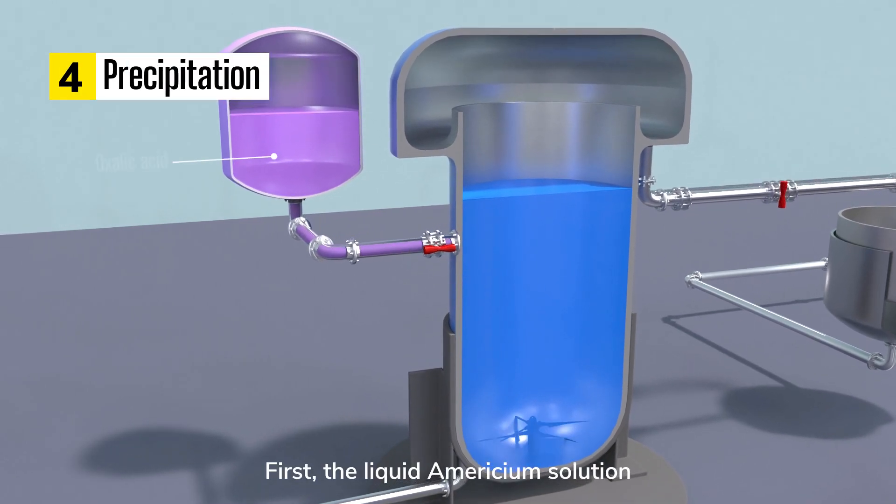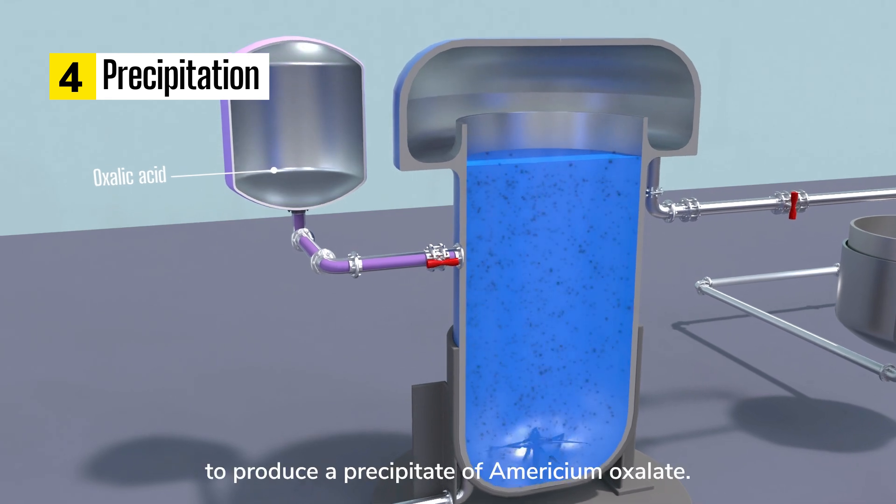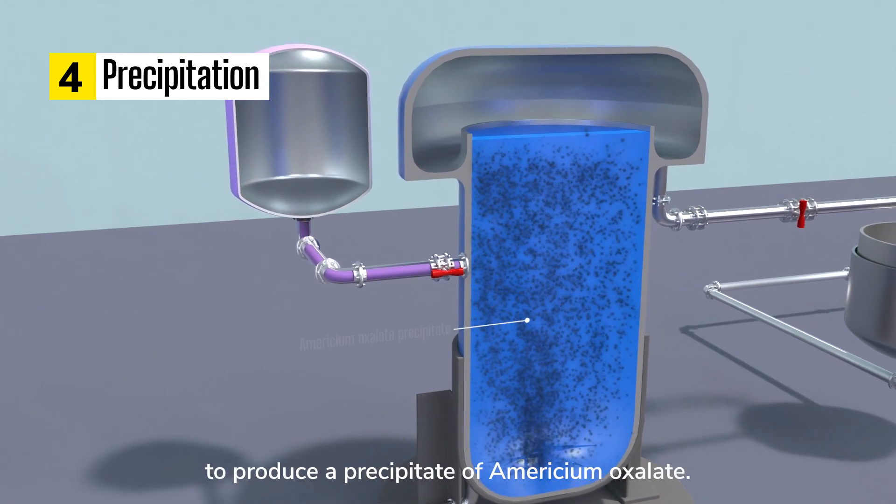First, the liquid Americium solution is mixed with oxalic acid to produce a precipitate of Americium oxalate.